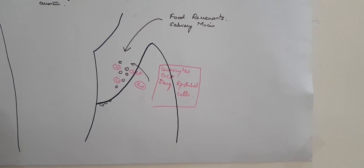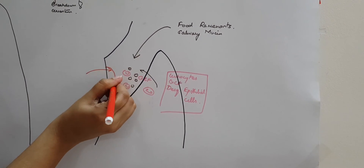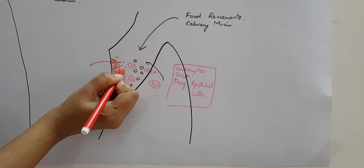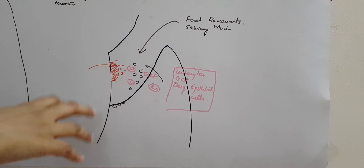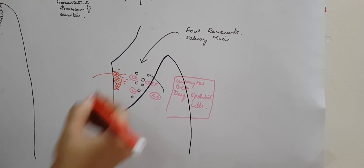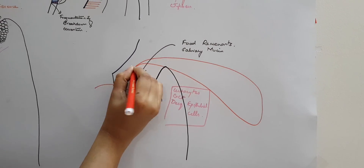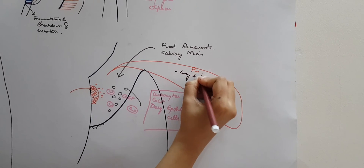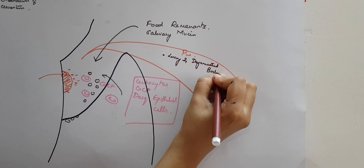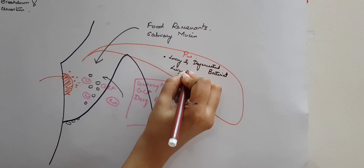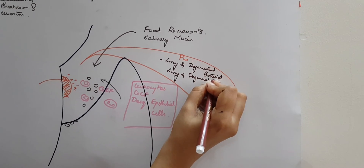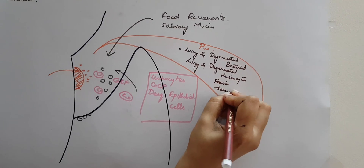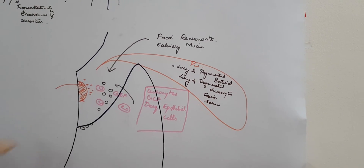From the other side of the pocket you have debris along with microorganisms and their byproducts — toxins and enzymes they release. Pus is not normally found in a pocket, but if it is present, it will contain living and degenerated bacteria, living and degenerated leukocytes, a small amount of fibrin, and serum. These are all the components of pus and the overall contents of the periodontal pocket.